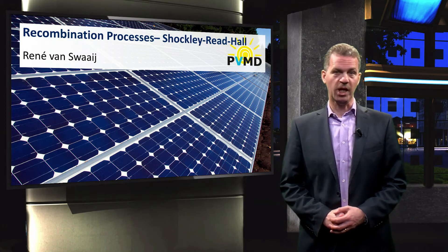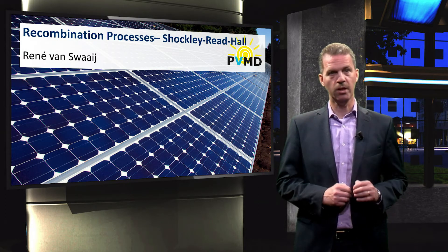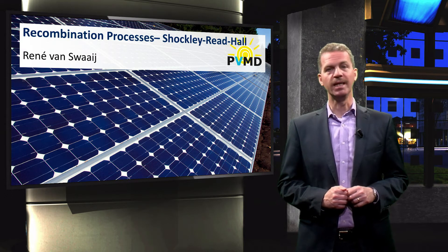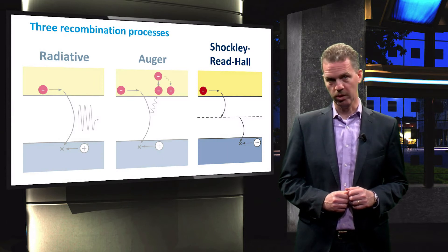In the previous video we have shown how radiative and Auger recombination work. The final recombination mechanism is Shockley-Reed Hall recombination.